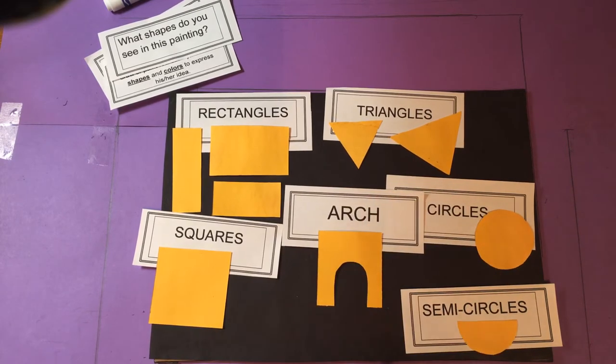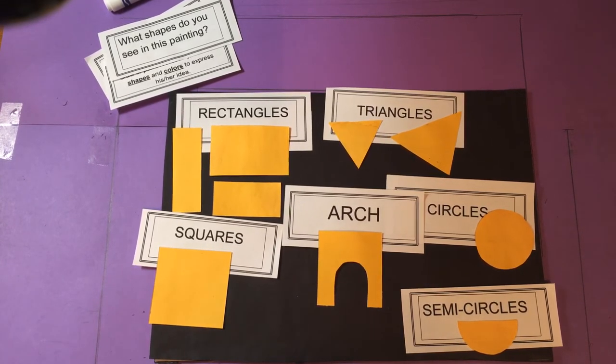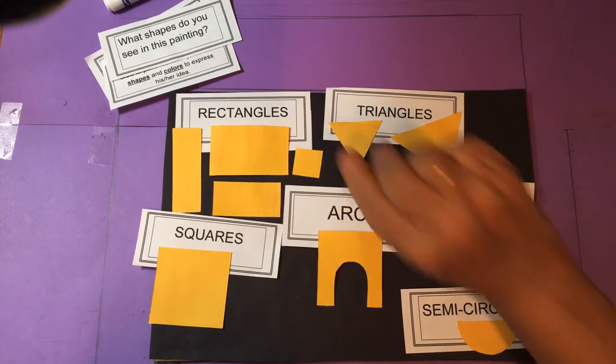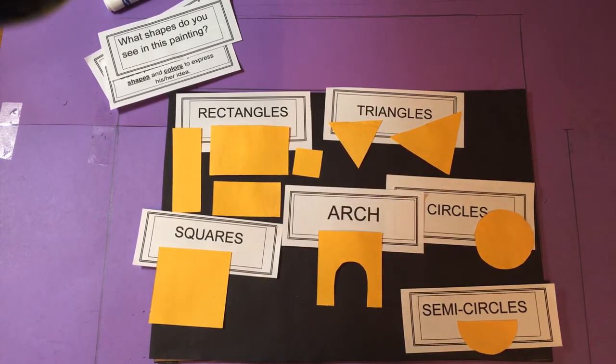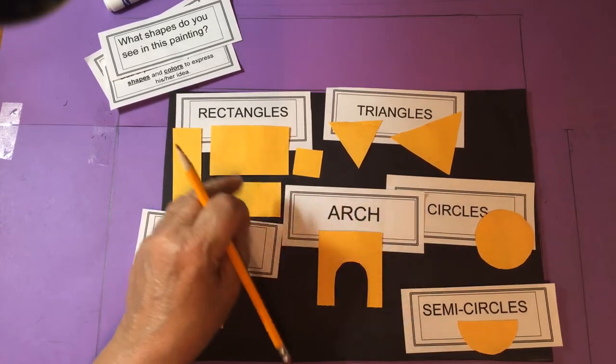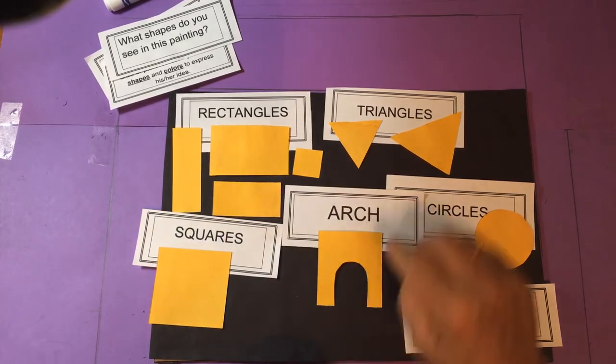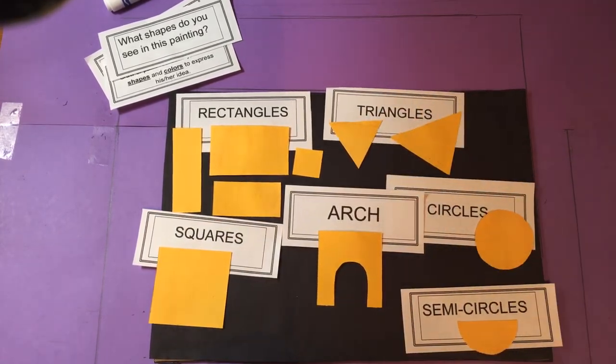So we're going to use our shapes boys and girls to create our abstract castle and sun. For part two I'd like you to have some tracer shapes made, different size rectangles. You don't need tons of them, maybe four or five and maybe two different size triangles. And remember you need two circles and a semicircle.